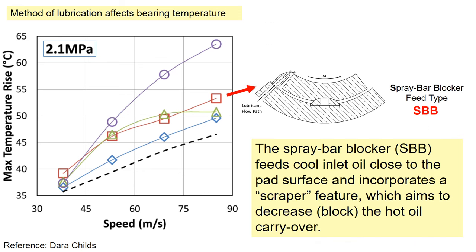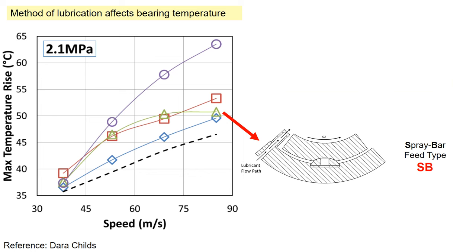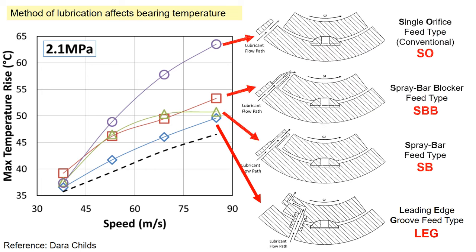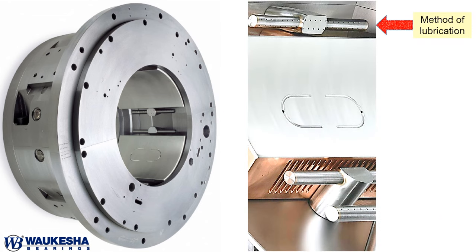The spray bar blocker feeds cool inlet oil closer to the pad surface, which aims to decrease the hot oil carryover. The spray bar introduces cool inlet oil closer to the pad surface, similar to the spray bar blocker. The leading edge groove is comprised of a groove that runs axially along the leading edge of the pad, with cool inlet oil directly supplied to the groove. Waukesha bearing has a similar spray bar feed type lubrication method as shown here.